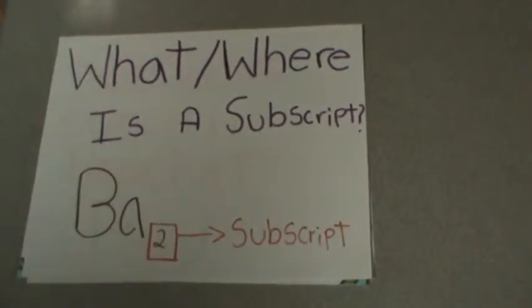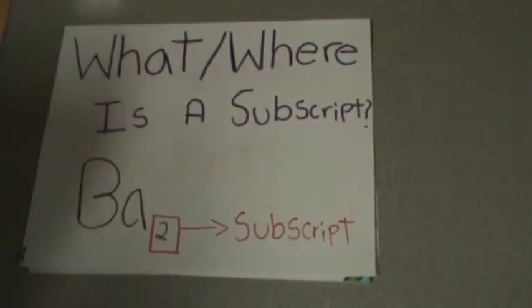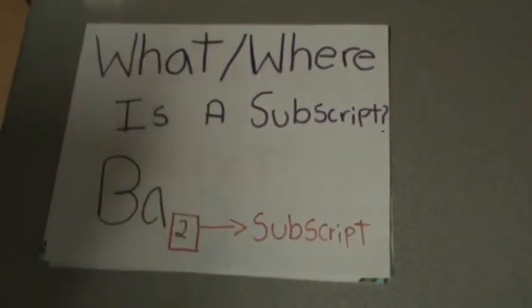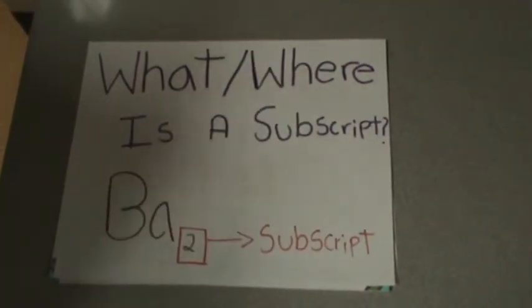What and where is a subscript? The little number underneath the chemical symbol is called the subscript. It is written in the lower right corner behind the symbol.